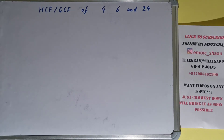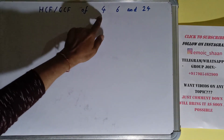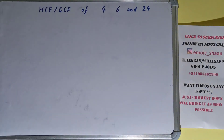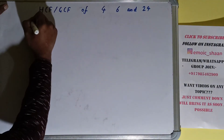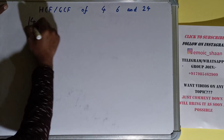Hello friends, and in this video I'll be helping you with the HCF or the GCF of the numbers 4, 6, and 24. So let's start. To find it out, we first need to write each of the numbers separately and prime factorize each of them.